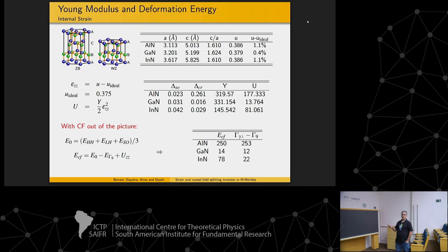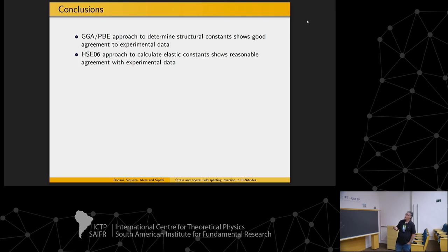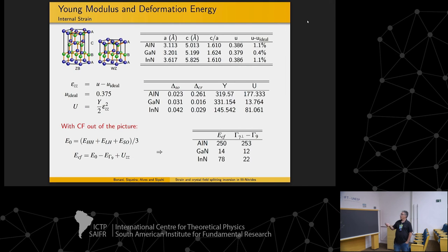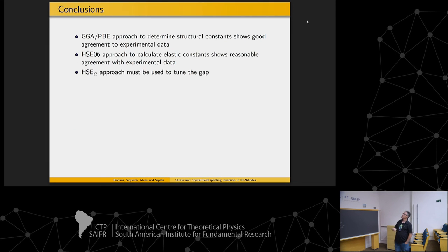And when I do that, the energy that I found is 250, and the actual distance among the two states is 253. For gallium nitride is 14 and 12, and for indium nitride is 78 and 22. Indium nitride I cannot say that it's very good, but this one, that's the most impressive one, that fits quite well. So then I show that the release of strain on this particular system is given by this mechanism of shrinking or enlarging this specific bond.